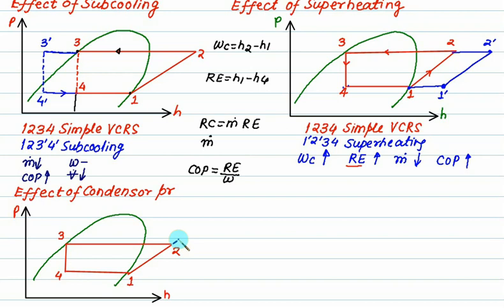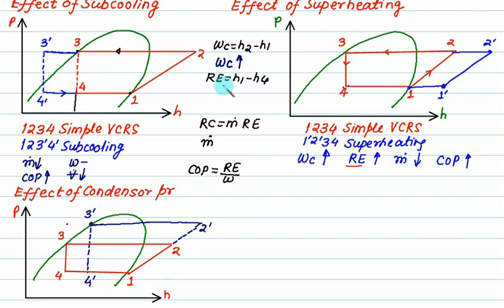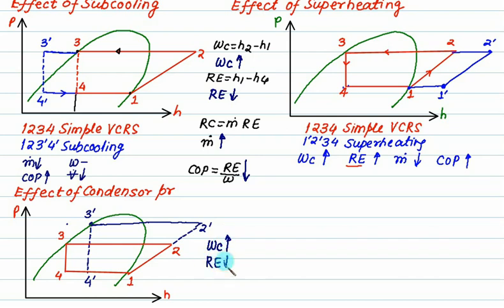If condenser pressure increases, state 4-dash shifts to the left. As a result, compressor work increases — which is not desirable. The RE, which was h1 minus h4, becomes h1 minus h4-dash, so RE decreases — also not desirable. Since RE decreases, for the same RC the mass flow rate increases. The COP decreases, and additionally the compressor discharge temperature T2-dash is greater than T2, which is also undesirable.